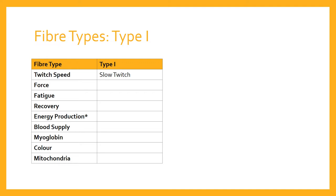Let's look at the characteristics of each fibre type, starting with type one fibres. We've already said they're slow twitch. These fibres don't produce a great amount of force when they contract — they're very low force. But the trade-off is that they can contract for a very long time repeatedly because they're slow to fatigue; they don't get tired very quickly. In terms of recovery, once a type one fibre is fatigued, it takes quite a long time for that fibre to be ready to go again.